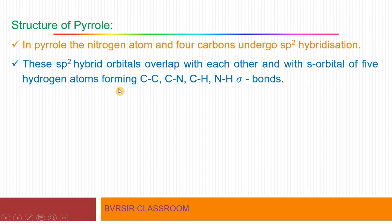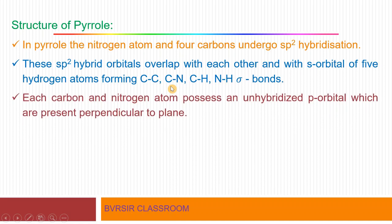These sp2 hybrid orbitals overlap with each other and with the s orbital of five hydrogen atoms, resulting in the formation of sigma bonds: C–C bonds, C–N bonds, and C–H bonds form this way. Between carbon and hydrogen, sigma bonds form. Between nitrogen and hydrogen, sigma bonds also form. In pyrrole, these sp2 hybridized orbitals fulfill all sigma bond requirements.